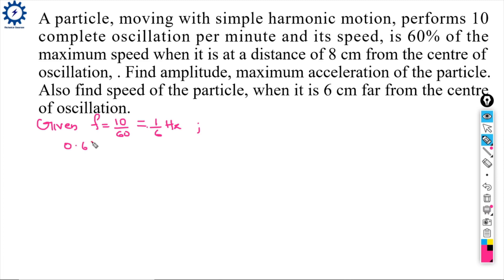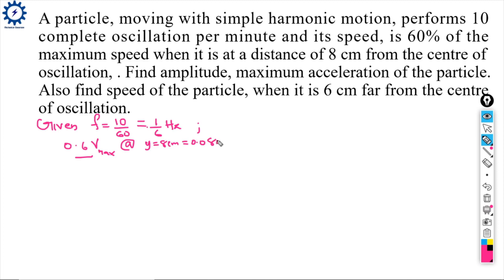The speed at y = 8 cm is 60% of the maximum speed, meaning V = 0.6 × V_max at y = 0.08 m.